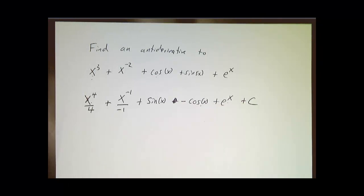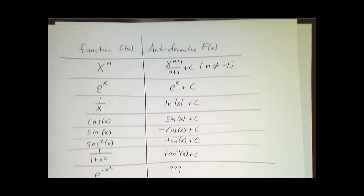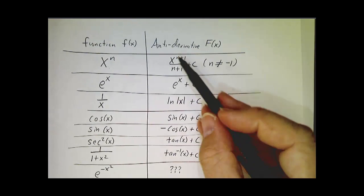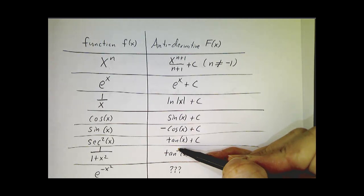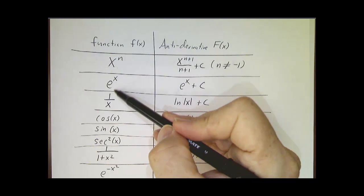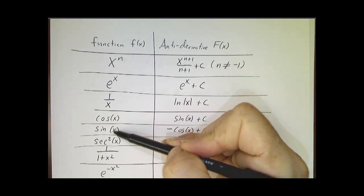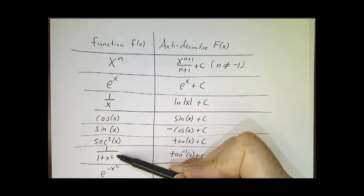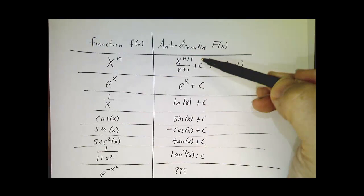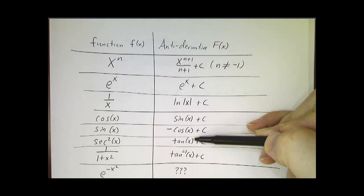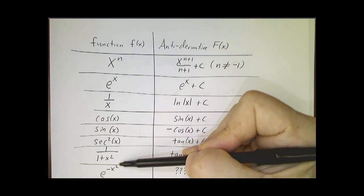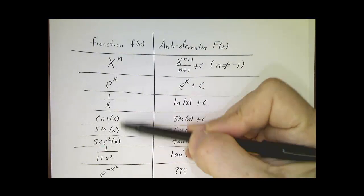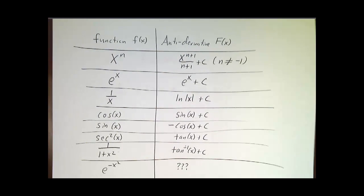Antiderivative e to the x is e to the x, and you add a constant. So if the function that you have is made up of pieces that are on this table, 3 times this plus 7 times this plus 7 times that plus 135 times that minus 172 times that, then you can write down an antiderivative by combining the things on the other side. If you don't find the function you're looking for on the list of known derivatives, you're out of luck.